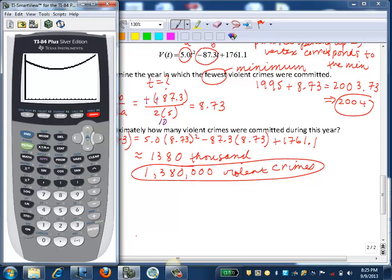And here we can see it. And now we expect that the vertex is going to be approximately 8.73, 1380. So we can calculate it. So second trace to calculate the minimum. We want a left boundary. So we can scroll a little bit to the left of where that vertex appears. Hit enter. And then we want to scroll a little bit to the right of where that vertex appears. And hit enter. And then we hit enter one more time. And we can see we do get approximately 8.73, 1380.